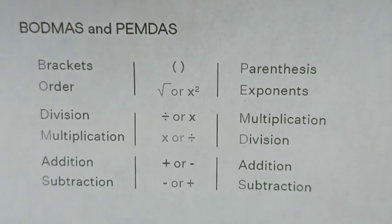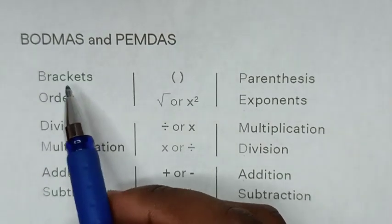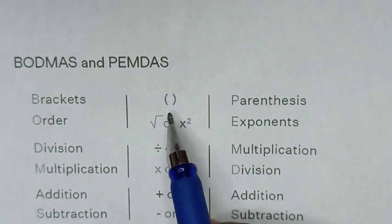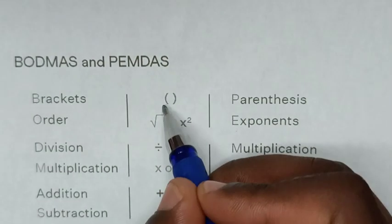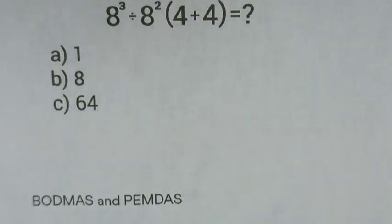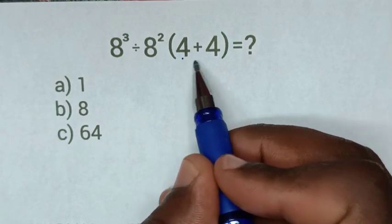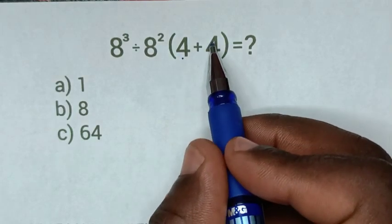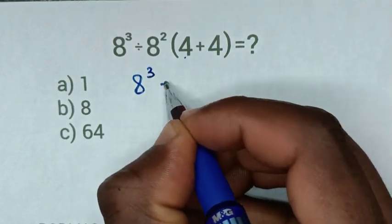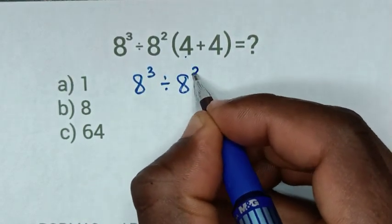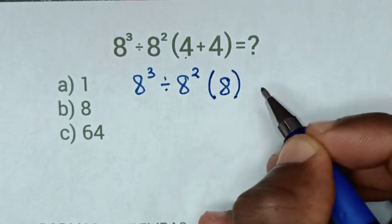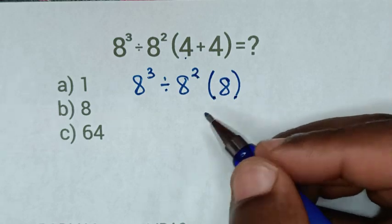So from our problem, first from bracket or parenthesis, we have bracket from our problem. So we start to deal first with bracket. The bracket is 4 plus 4 operation, whereas 4 plus 4 is 8. So it will be 8 power 3 divided by 8 power 2, then bracket 8 bracket.